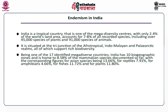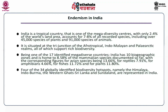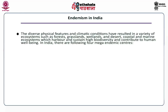The corresponding figures for avian species are 13.66 percent, for reptiles 7.91 percent, for amphibians 4.66 percent, for fishes 11.72 percent, and for plants 11.80 percent. Four of the 34 globally identified biodiversity hotspots — namely the Himalayas, Indo-Burma, the Western Ghats and Sri Lanka, and Sundalands — are represented in India. The diverse physical features and climatic conditions have resulted in a variety of ecosystems such as forest, grassland, wetlands, desert, coastal and marine ecosystems, which harbor and sustain high biodiversity and contribute to human well-being.